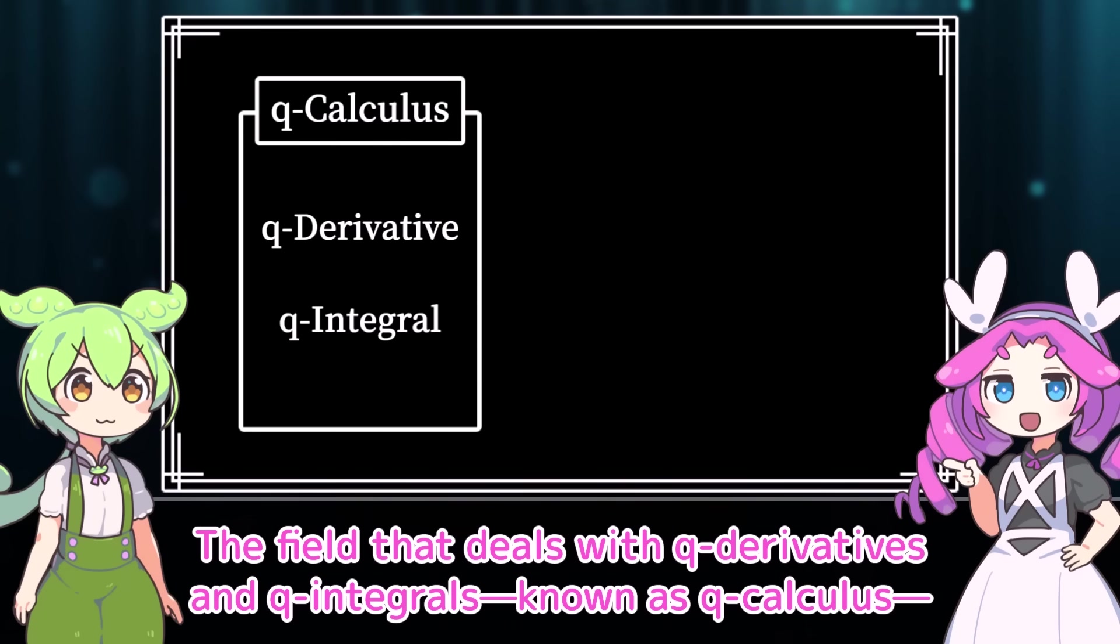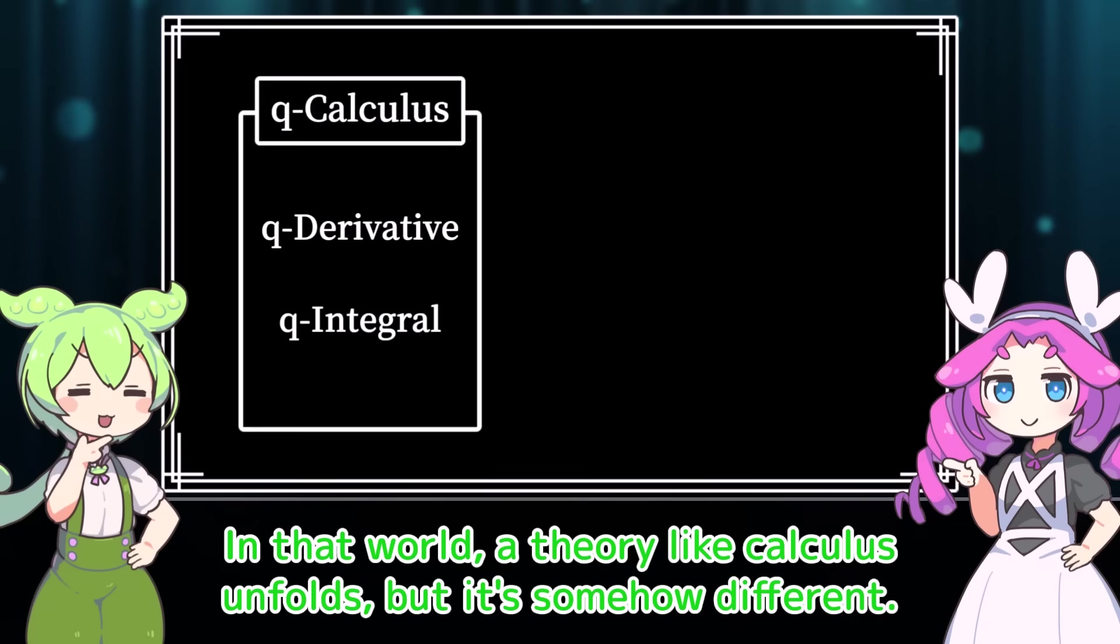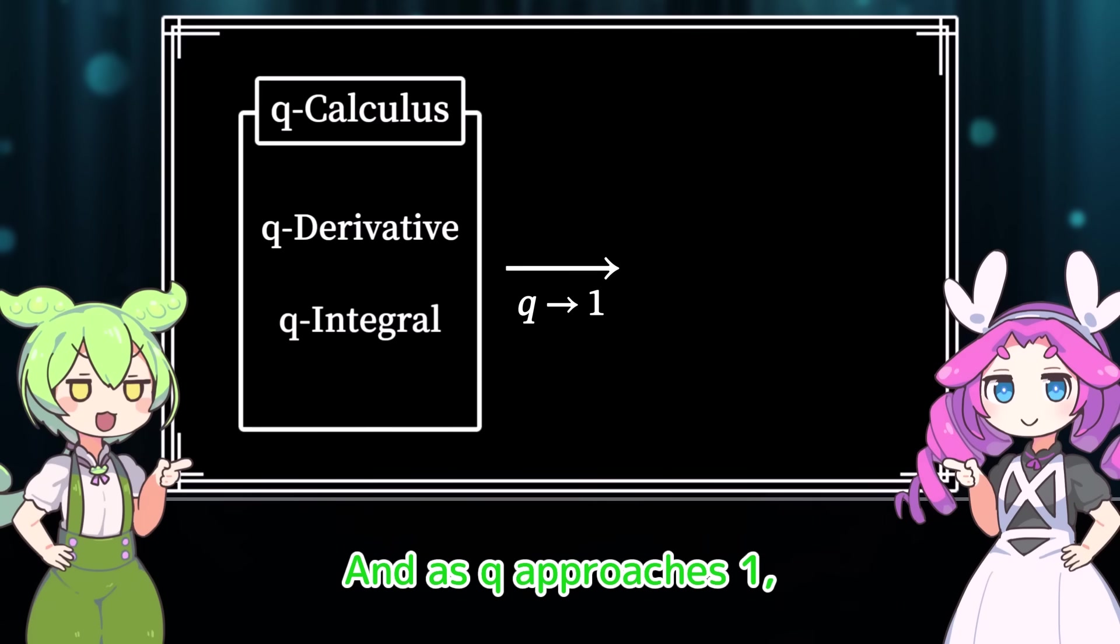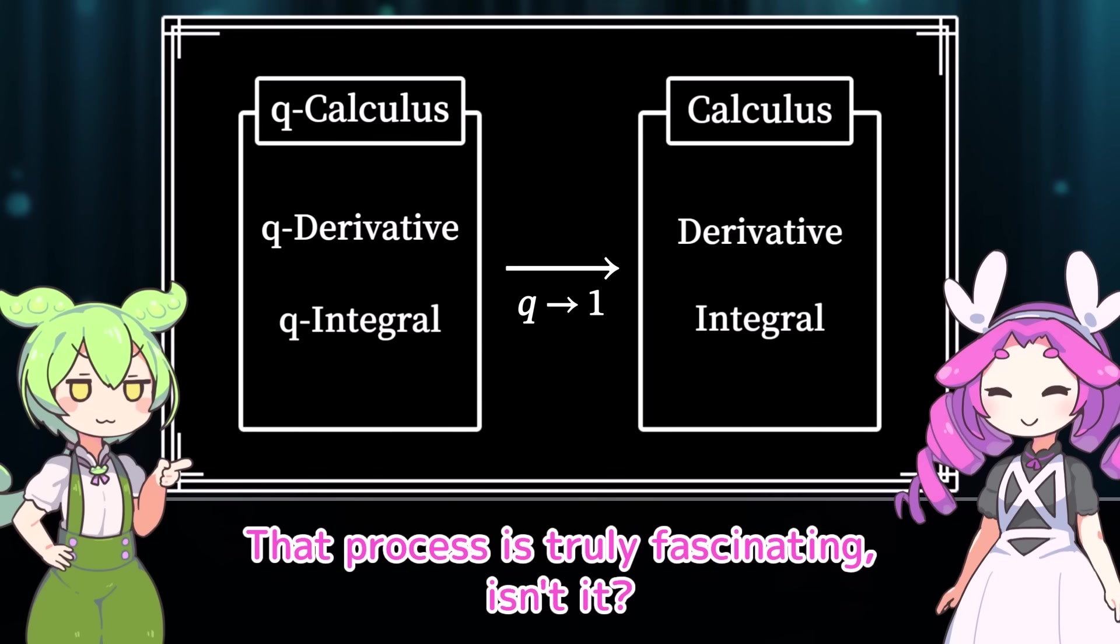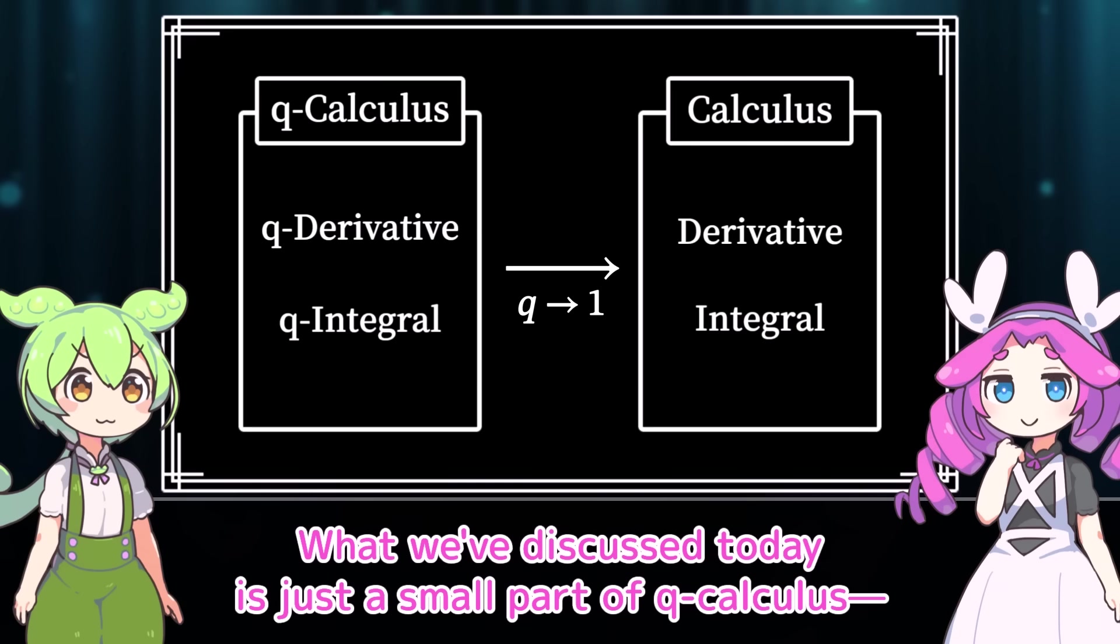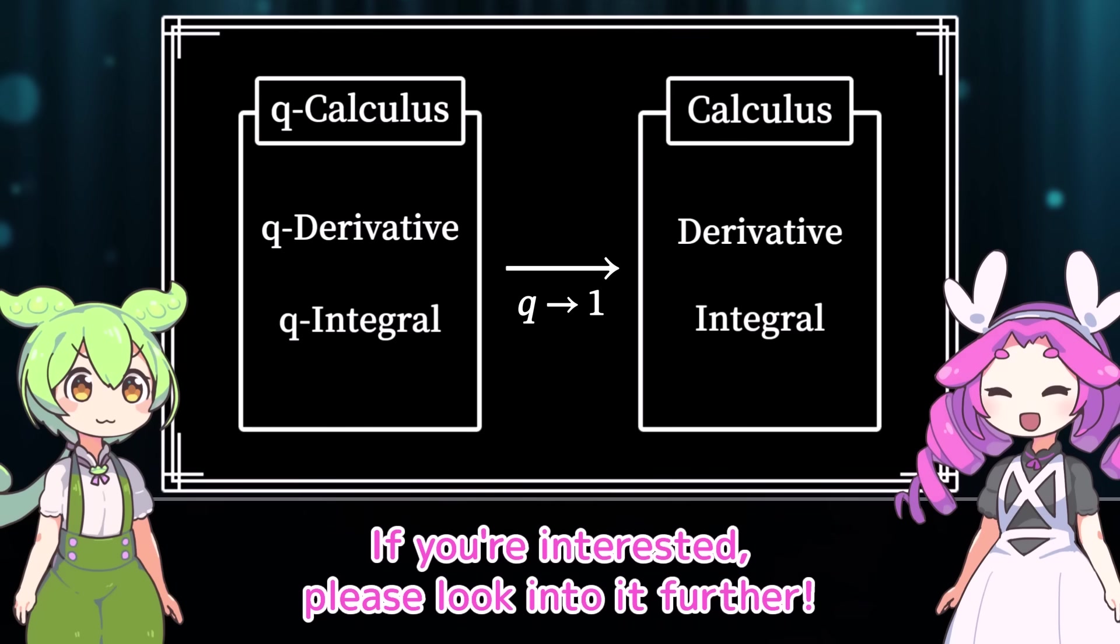Let's summarize conceptually what we've seen so far. The field that deals with q derivatives and q integrals, known as q calculus, can be seen as a deformation of usual calculus through the parameter q. In that world, a theory like calculus unfolds, but it's somehow different. And as q approaches 1, the difference from usual calculus disappears. That process is truly fascinating, isn't it? What we've discussed today is just a small part of q calculus, or more broadly, a small piece of the vast world of q analogues. If you're interested, please look into it further.